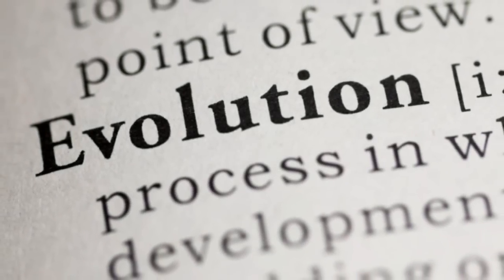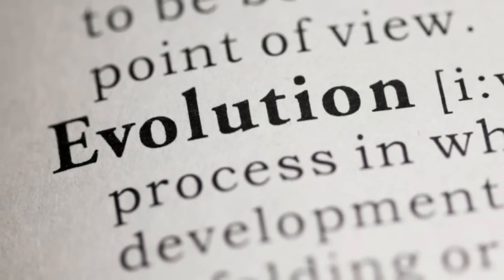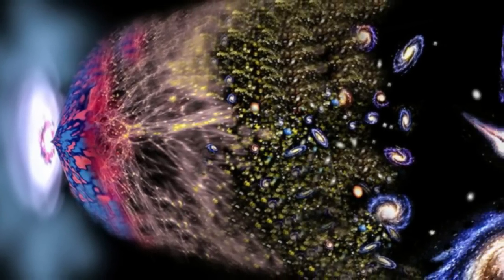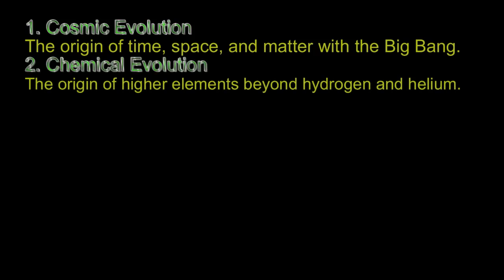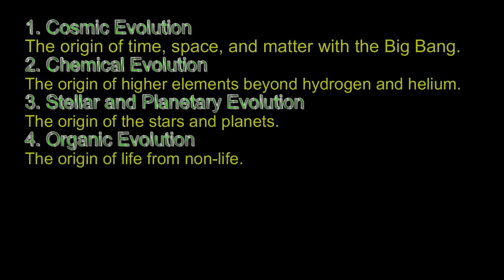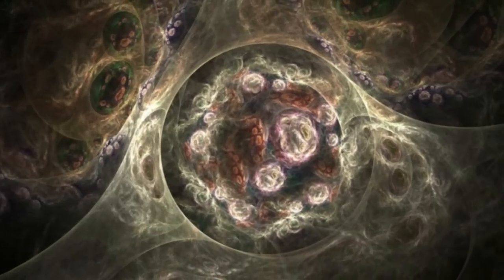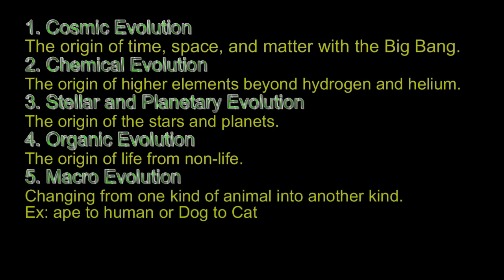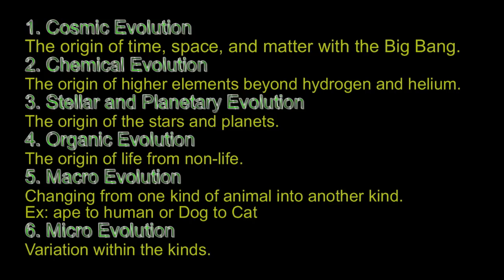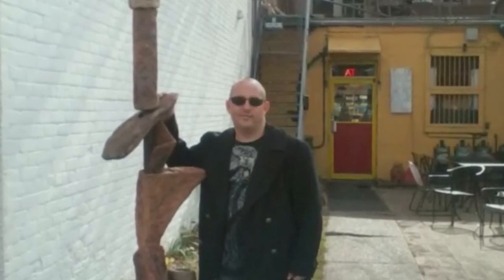One thing evolutionists won't discuss is the fact that the word evolution actually has six definitions. Number one, cosmic evolution — the origin of time, space, and matter with the Big Bang. Number two is chemical evolution, the origin of higher elements beyond hydrogen and helium. Number three is stellar and planetary evolution, the origin of stars and planets. Number four is organic evolution, the origin of life from non-life. Number five is macroevolution, the changing from one kind of animal to another kind. And number six, microevolution — variation within the kinds. Of those six definitions, only one of them, microevolution, has ever been observed. But that doesn't stop evolutionists from pretending they're all one thing.